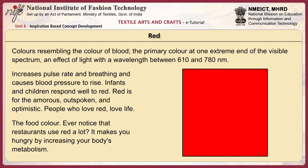Red resembles the color of blood — the primary color at one end of the visible spectrum, with a wavelength between 610 and 780 nanometers. It increases pulse rate and breathing and causes blood pressure to rise. Infants and children respond well to red. Red is the food color — restaurants use red a lot because it makes you hungry by increasing your body's metabolism.